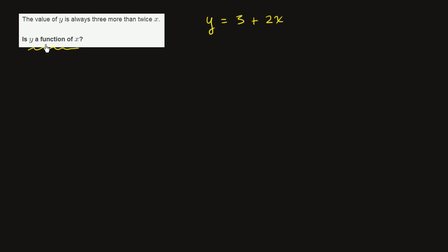Whenever you're asked whether something is a function of something else, you're really just saying, for any input x, does it map to exactly one y? So if we say y is a function of x, for any x that you input into this function, you must get exactly one y.